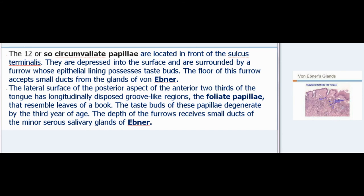The lateral surface of the posterior aspect of the anterior two-thirds of the tongue has longitudinally disposed groove-like regions — the foliate papillae — that resemble leaves of a book. The taste buds of these papillae degenerate by the third year of age. The depth of the furrows receives small ducts of the minor serous salivary glands of Ebner.